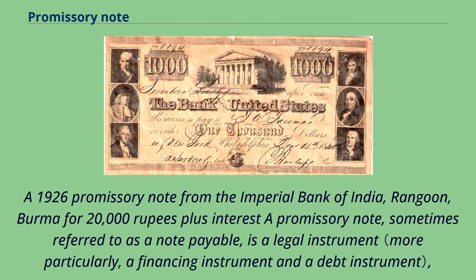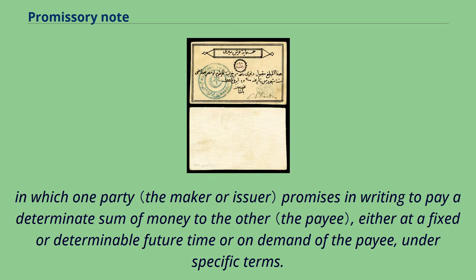A 1926 promissory note from the Imperial Bank of India, Rangoon, Burma for 20,000 rupees plus interest. A promissory note, sometimes referred to as a note payable, is a legal instrument in which one party promises in writing to pay a determinate sum of money to the other, either at a fixed or determinable future time or on demand of the payee, under specific terms.